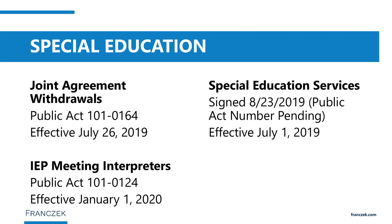The second special education item requires that ISBE adopt rules to establish criteria, standards, and competencies for bilingual language interpreters at IEP meetings. IDEA provides that parents who need language interpreters be provided them to participate in IEP meetings, and this law will require ISBE to develop standards for what is required of those interpreters so it is done effectively.